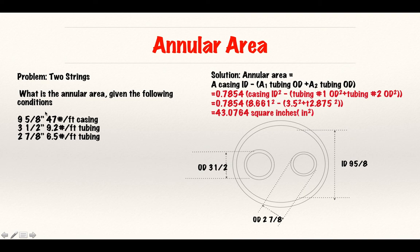The heavier my tubing or casing, the smaller my ID. The smaller my ID is going to be for my casing, and what does that do for my annular area? If I have a heavier weight casing, I'm going to have a smaller annular area.